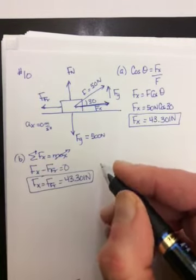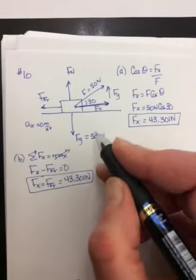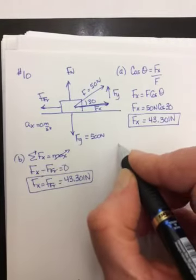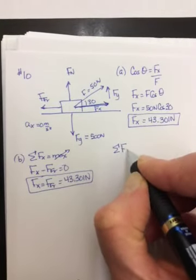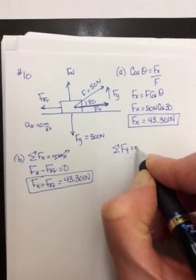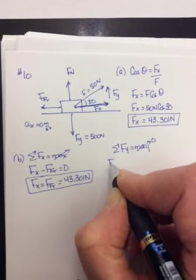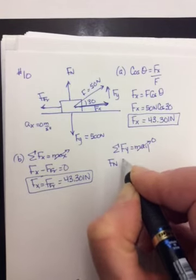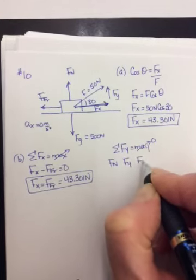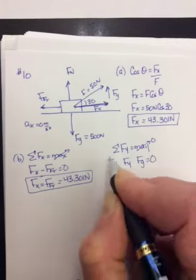Part C says, what is the normal force? Well, to find the normal force, we need to do sum of the forces in the y direction. It's not moving in the y, so M-A-y is 0. So we have Fn, we have Fy, we have Fg equals 0.